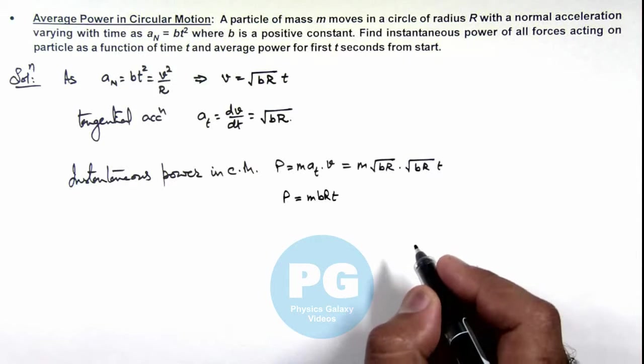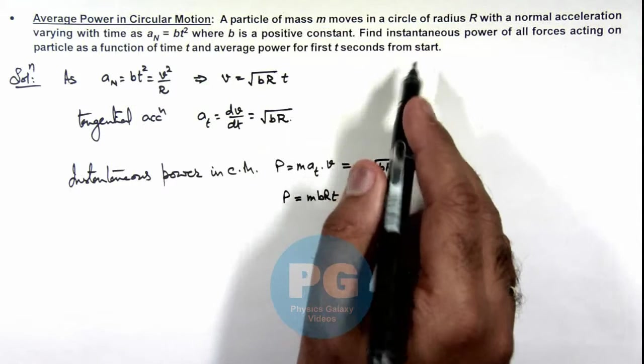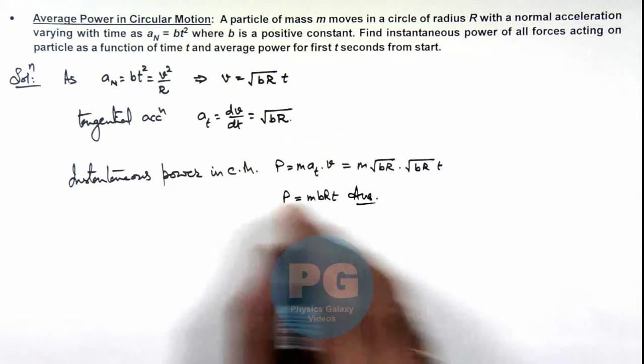And we also require to find the average power for first t second from start, so this is the instantaneous power as result of this problem.